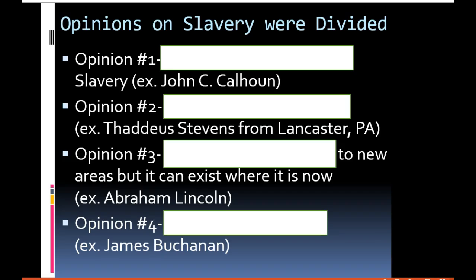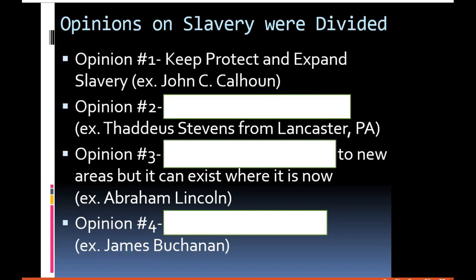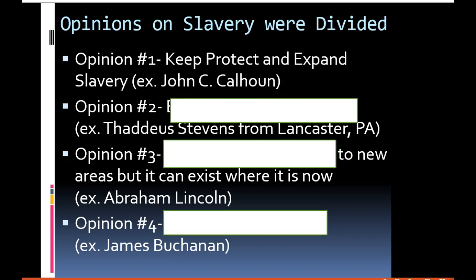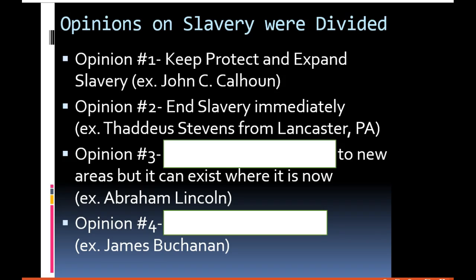Many people had various opinions about slavery, and four important figures represent four different views. John C. Calhoun from South Carolina wanted to keep, protect, and even expand slavery — he thought it was a good thing. Thaddeus Stevens, a congressman from Lancaster, Pennsylvania, who was secretly married to a free African American woman, believed slavery was wrong, terrible, a sin, and wanted to end it immediately.